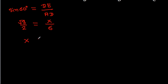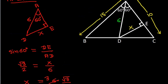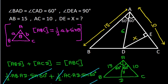So X equals 6 times root 3 over 2, and 6 divided by 2 is 3, so X equals 3 root 3. Therefore DE is 3 root 3.